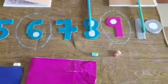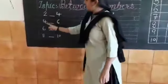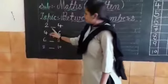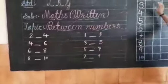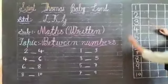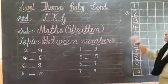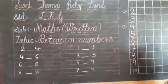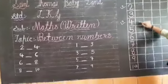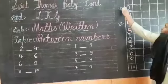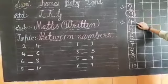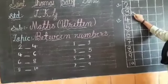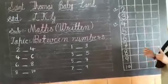Let's see the exercise related to between numbers. Which number is in between of two and four? Look here — where is two? Two is here. Where is four? Four is here. Which number is in between of two and four? Three is in between of two and four. Our answer is three.